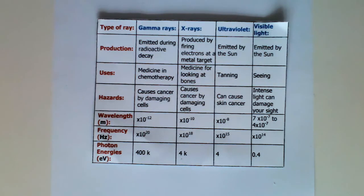And then visible light, is emitted by the sun, uses is seeing, hazards intense light can damage your sight, wavelength 7 times 10 to the minus 7 to 4 times 10 to the minus 7, frequency times 10 to the 14th, and photon energies 0.4.